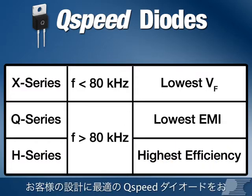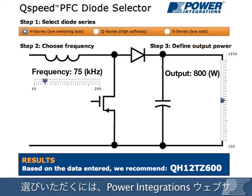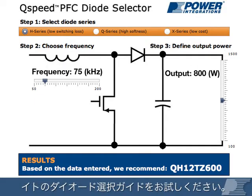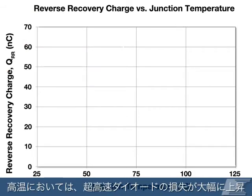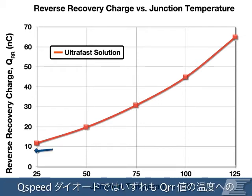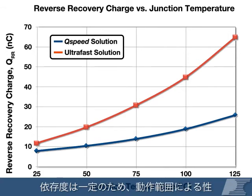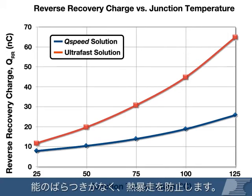To select the perfect Q-Speed diode for your design, try the diode selector featured on the Power Integrations website. Ultra-fast diode losses increase dramatically at high temperatures, forcing designers to oversize components to compensate. All Q-Speed diodes exhibit a very flat QRR temperature dependency, which ensures consistent performance across the operating range and prevents thermal runaway.